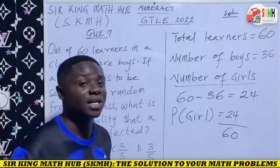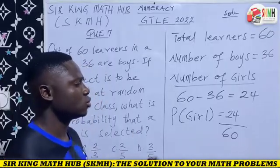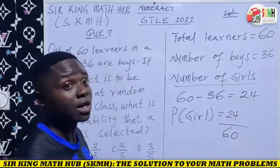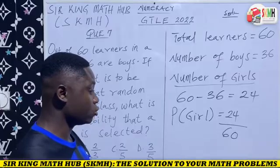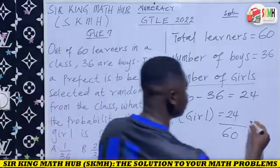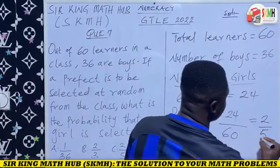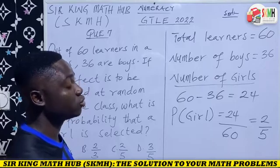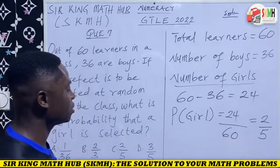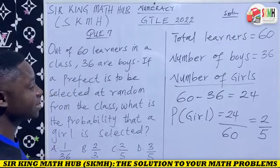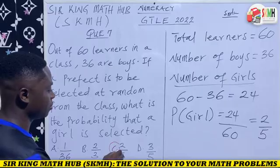During the exams, calculators are allowed. So to reduce this to the lowest form, simply enter the fraction on the calculator: 24 divided by 60, press the equal sign — and I'm getting 2 out of 5. When you reduce 24 out of 60 to the lowest form, that gives us 2 out of 5. So from the alternatives, the right answer is C.